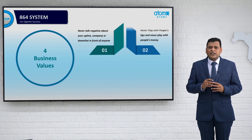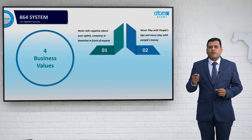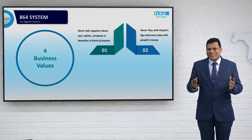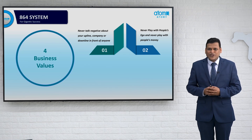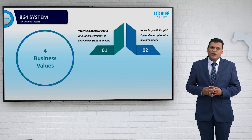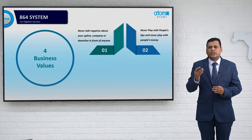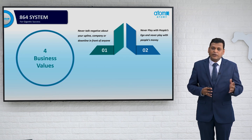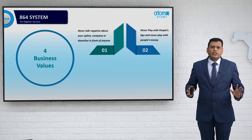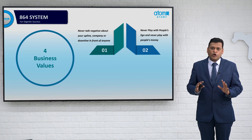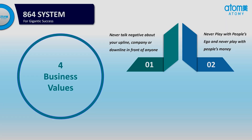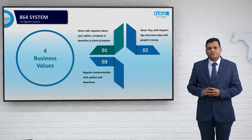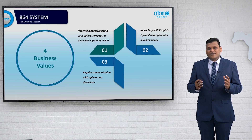The second business value is to never play with the ego or money of people. This is very important because if you play with money or ego, your team will not be with you forever — they will leave you, leave the company, and leave your team. So don't play with ego and don't play with people's money.